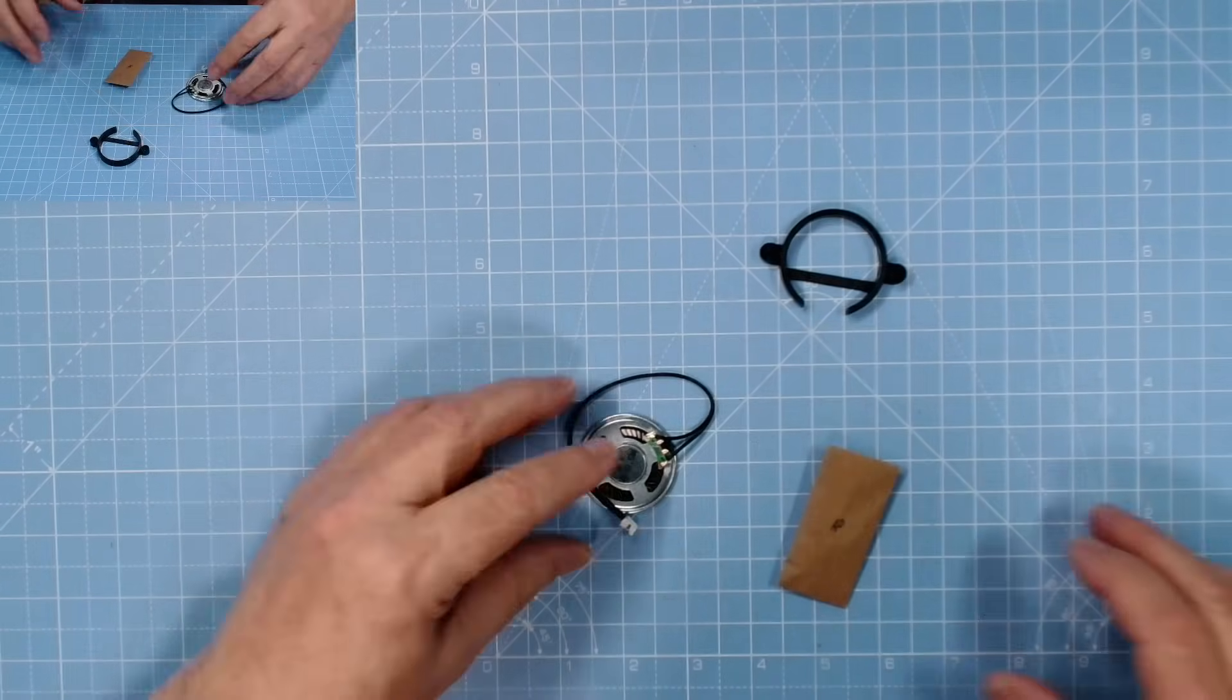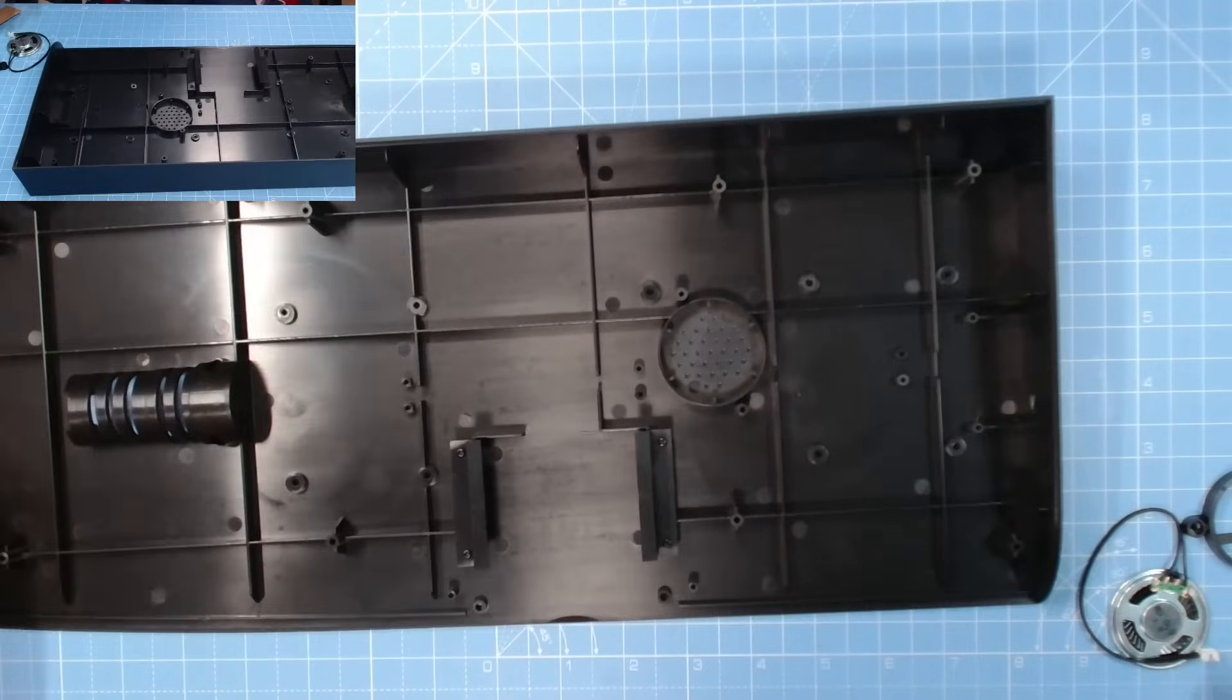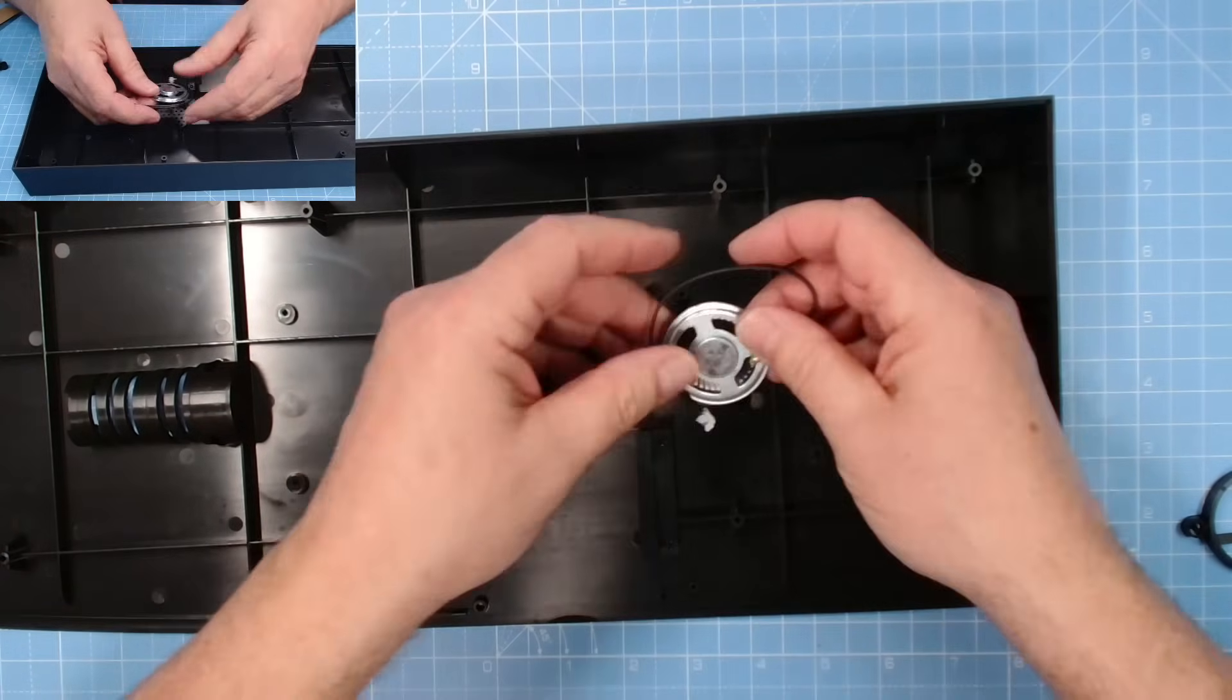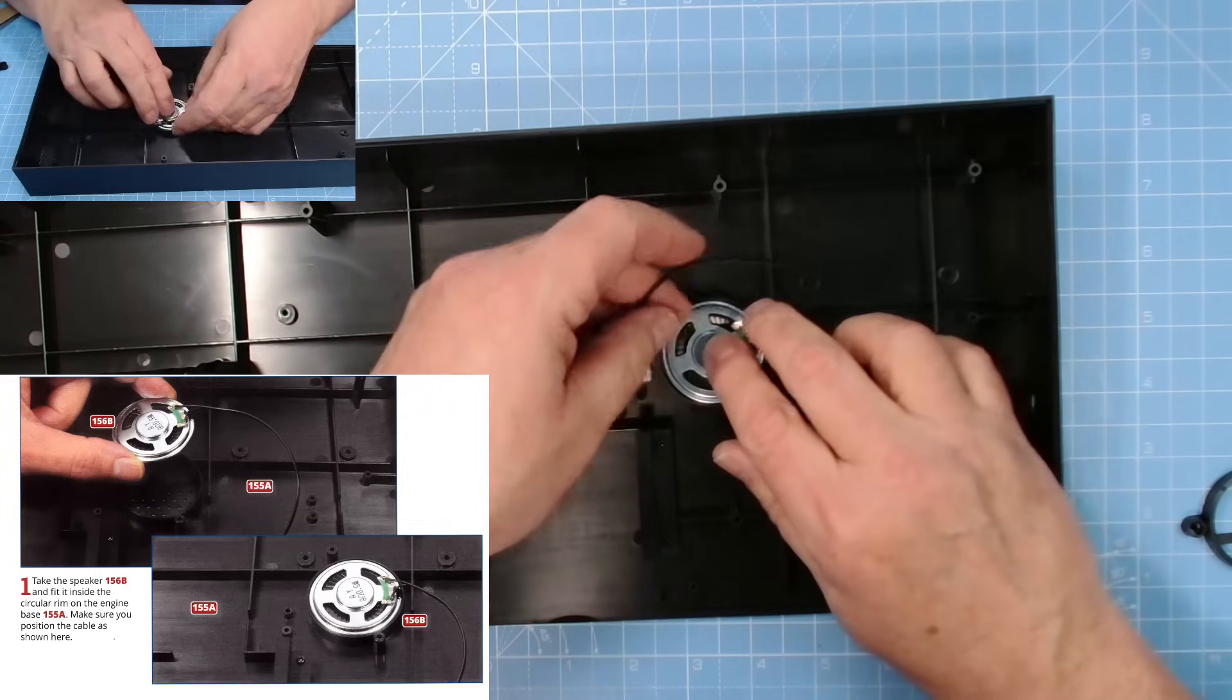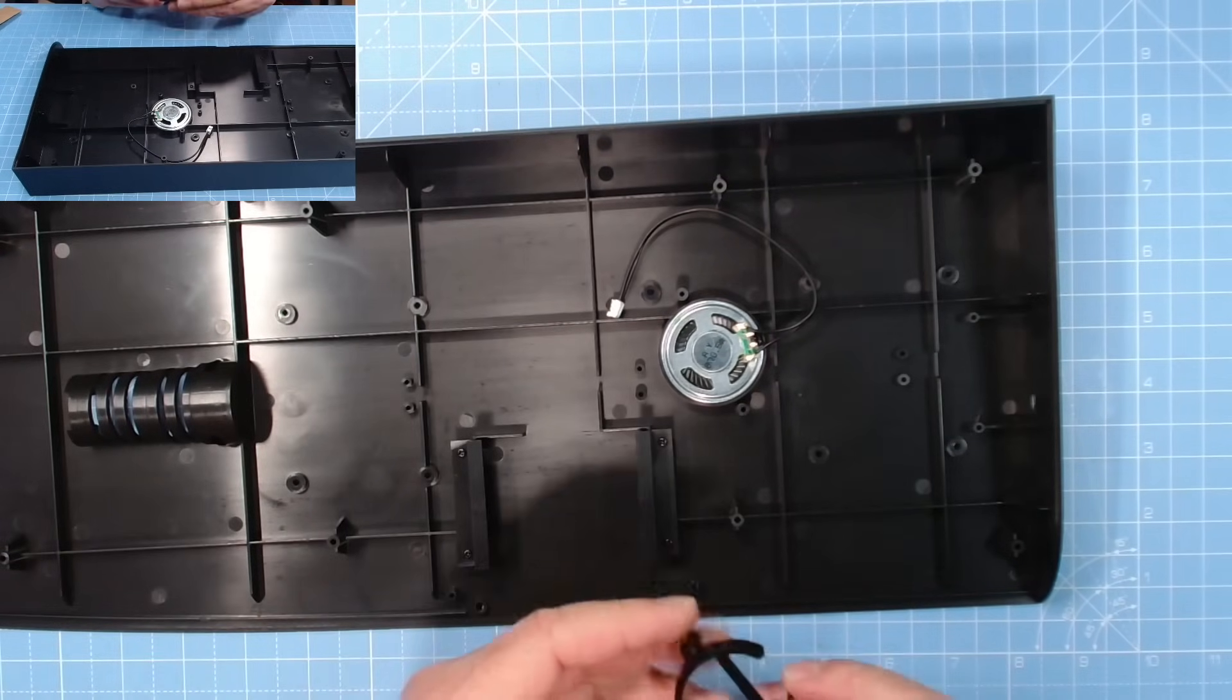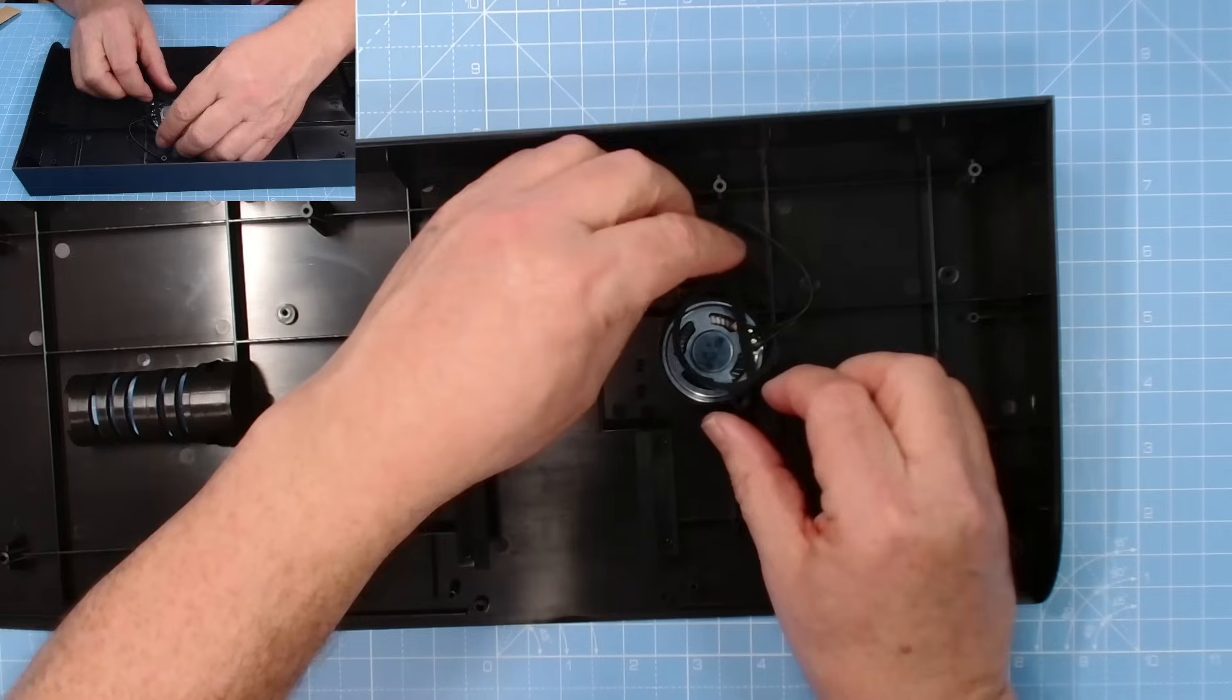There we go, those are our parts. So we need the base bike and basically we need to pop speaker into there. Speaker, there we go, there we go, just like that. Excellent. And then we just need to pop this ring over the top, this will clamp it into place hopefully.